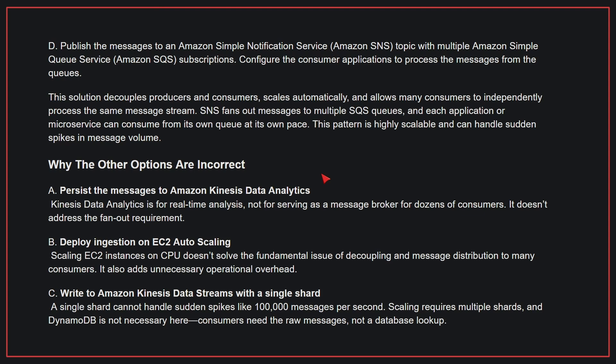Why the other options are incorrect: A — Amazon Kinesis Data Analytics is for real-time analysis, not for serving as a message broker for dozens of consumers; it doesn't address the fan-out requirement. B — Scaling EC2 instances on CPU doesn't solve the fundamental issue of decoupling and message distribution to many consumers, and adds unnecessary operational overhead. C — A single Kinesis Data Streams shard cannot handle sudden spikes like 100,000 messages per second; scaling requires multiple shards, and consumers need the raw messages, not a database lookup. Therefore, the correct answer is D.